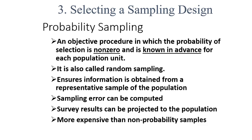First of all, what is probability sampling? In the last lecture we discussed it briefly. Now, to remind you: it is an objective procedure in which the probability of selection is non-zero and is known in advance for each population unit. Before collecting data, the researcher knows the population units and from where he or she is going to collect the data.